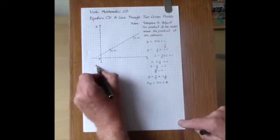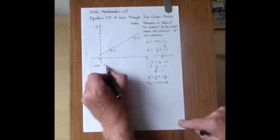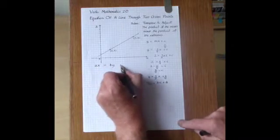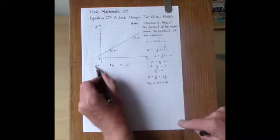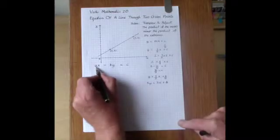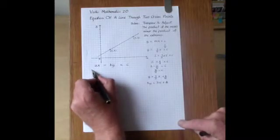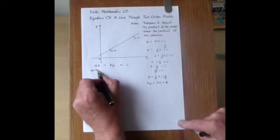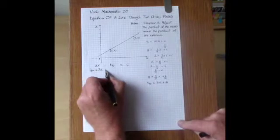The form of the equation is AX minus BY equals C and we have to find the three numbers A, B and C. For the number A it's the difference in the Y coordinates. We can call that Y2 minus Y1 times X.